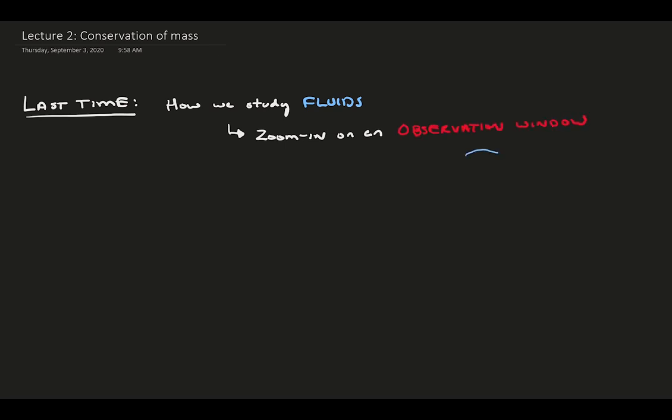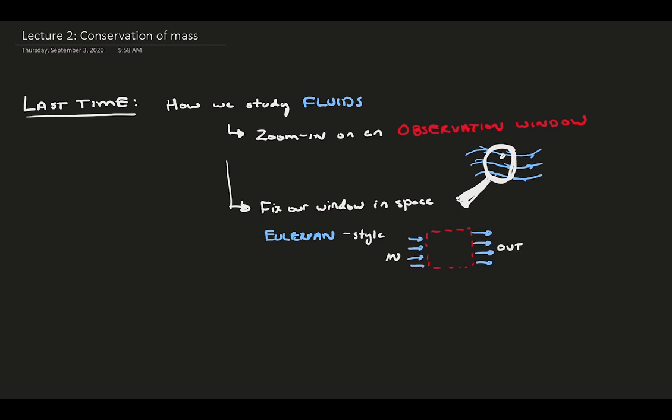First, we zoom in on observation windows, and these windows aren't so big that we miss important changes in the flow, but they're not so small that we break continuity. Then, we fix our observation window in space and watch fluid pass by using an Eulerian perspective. So we are constantly considering a point in space and how fluid changes as it passes through that point.